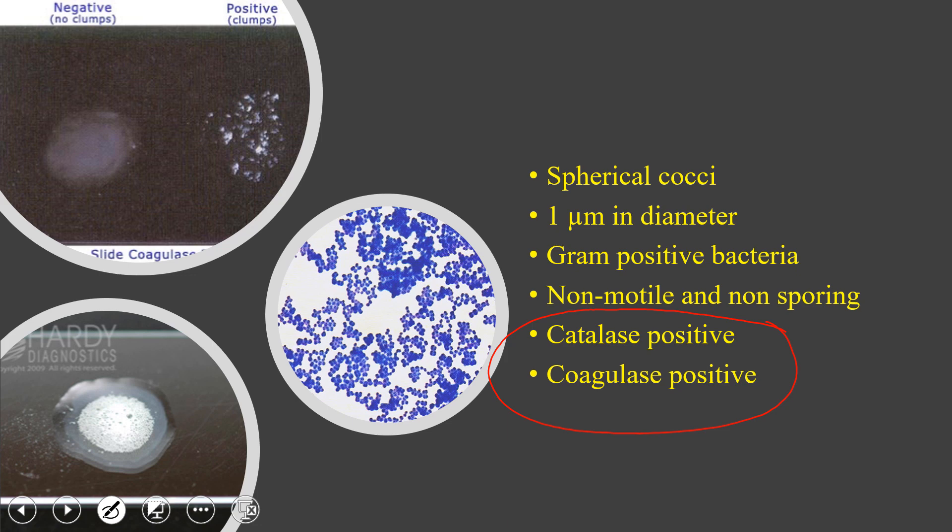When you observe gram-positive cocci under the microscope, you perform the catalase test. If catalase-positive, the organism is either Staphylococcus or Micrococcus. To differentiate between them, you perform the Oxidative and Fermentative test, known as the O/F test. Staphylococcus are fermentative bacteria, whereas Micrococcus are oxidative bacteria — and from this result you can differentiate the two.